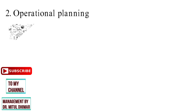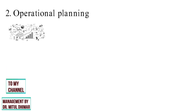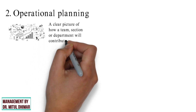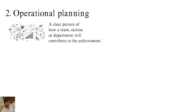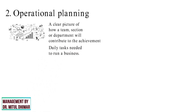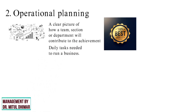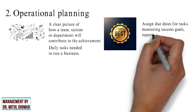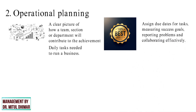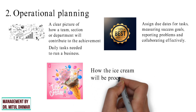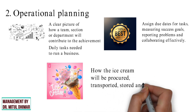Operational planning is a highly detailed plan that provides a clear picture of how a team, section, or department will contribute to the achievement of the organization's objectives. The operational plan maps the daily tasks needed to run a business. It works best when an entire department assigns due dates for tasks, measures success goals, reports problems, and collaborates effectively. For example, an operational plan for an ice cream truck may include details of how the ice cream will be procured, transported, stored, and sold.